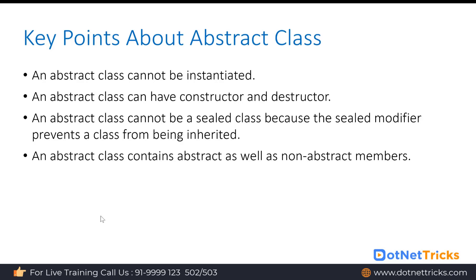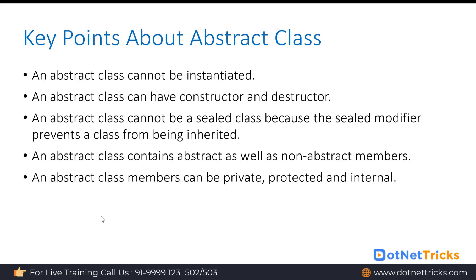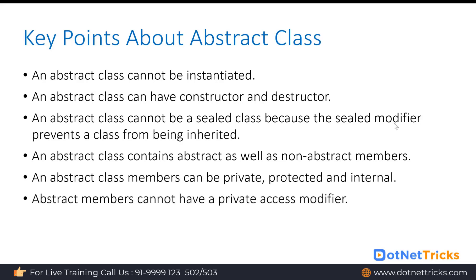An abstract class contains both abstract and non-abstract members. Abstract members must be implemented in the derived class. An abstract class's members can be private, protected, and internal as in a regular class. However, abstract members cannot be private because they need to be implemented in the derived class — if you make them private, you cannot define your implementation for those abstract methods. So all abstract methods should be either protected, internal, or public.